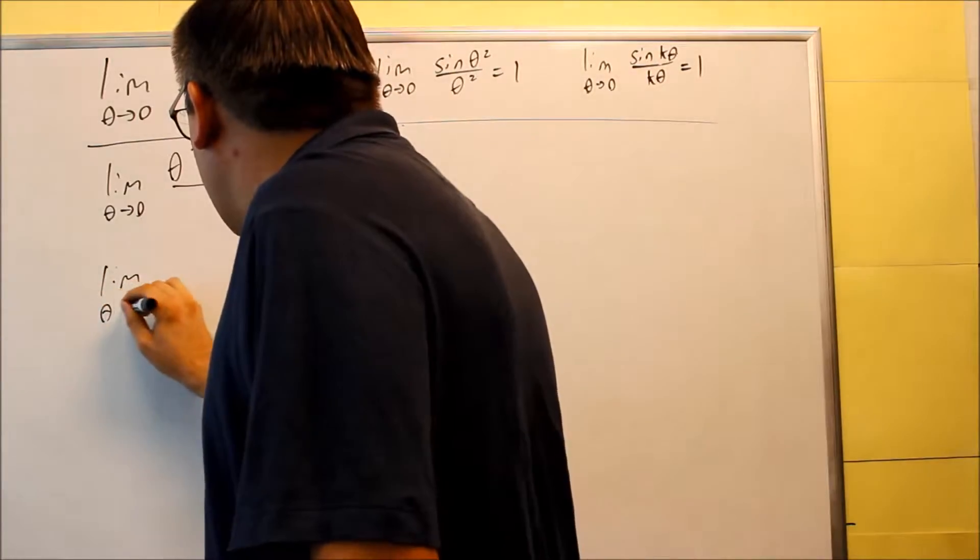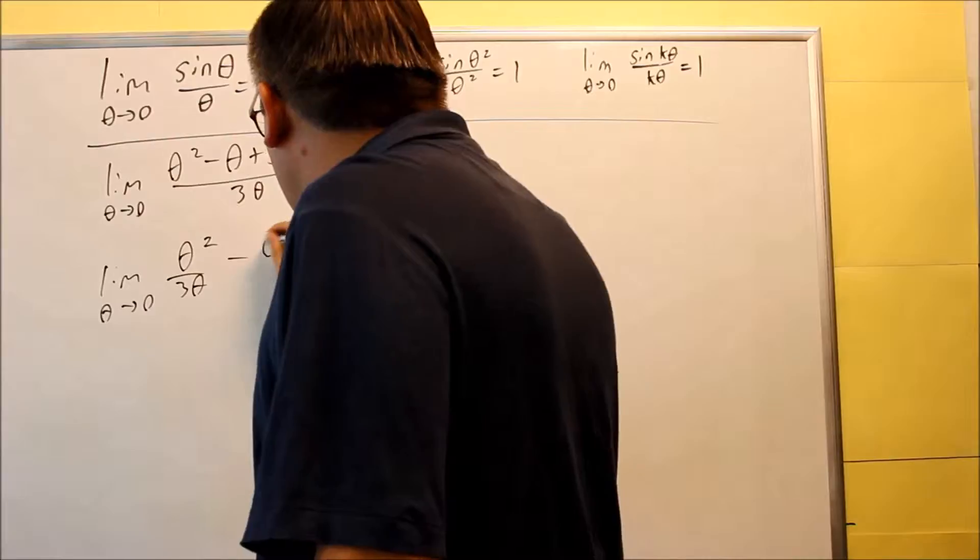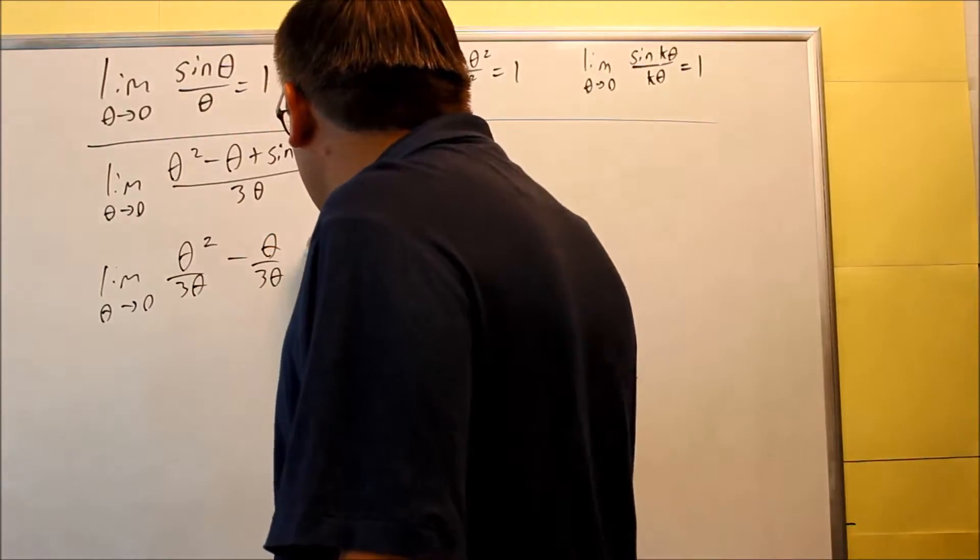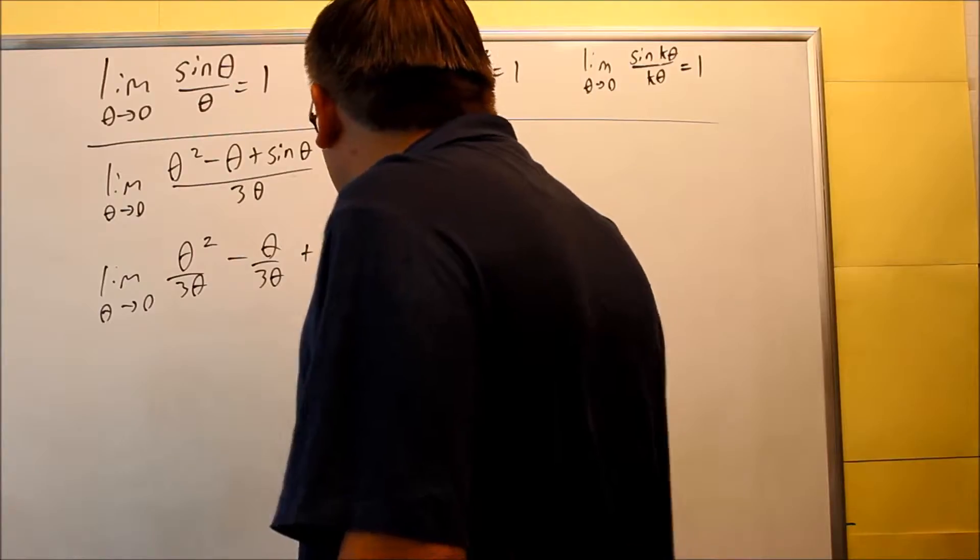So we're going to do limit as theta goes to zero and do theta squared over three theta minus theta over three theta plus sine theta over three theta.